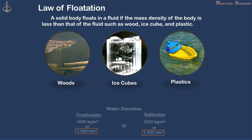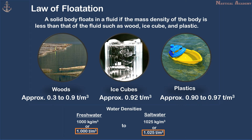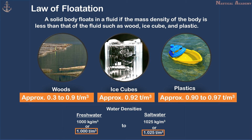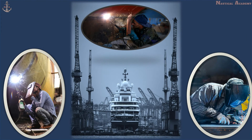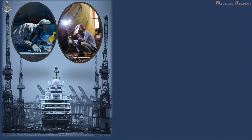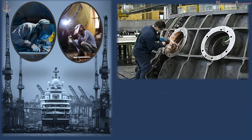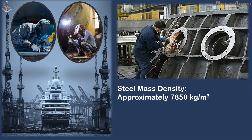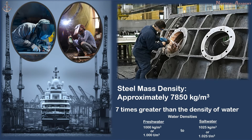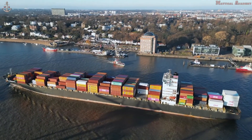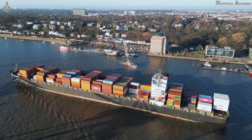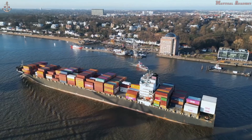The density of wood, ice cubes, and plastics is less than 1,000 kg per cubic meter. How about the mass density of the steel used to build a ship? It varies depending on the type or grade of the steel, approximately 7,850 kg per cubic meter, which is seven times higher than the density of water.